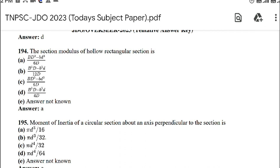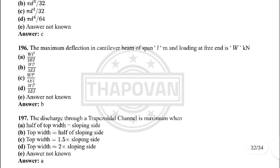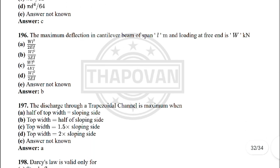Next: the section modulus of a hollow rectangular section is — the correct answer is option A: (BD³ − bd³) / (6D). Next: moment of inertia of a circular section about the axis perpendicular to the section is — the correct answer is option C: πD⁴ / 32.